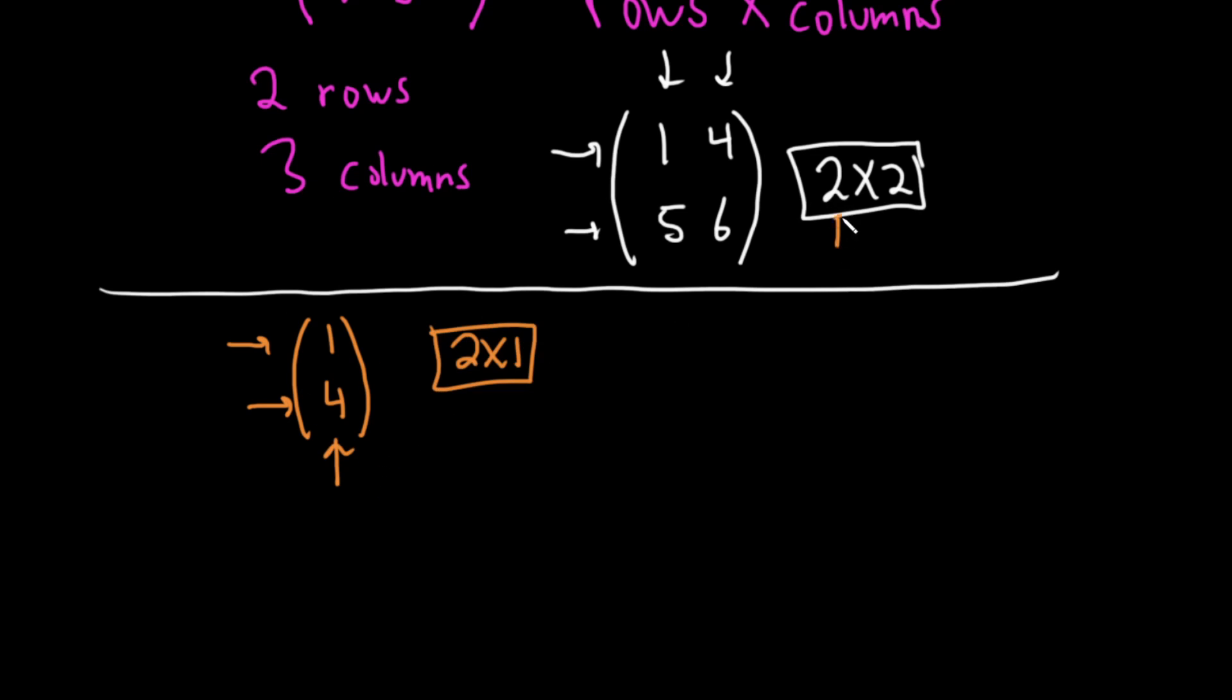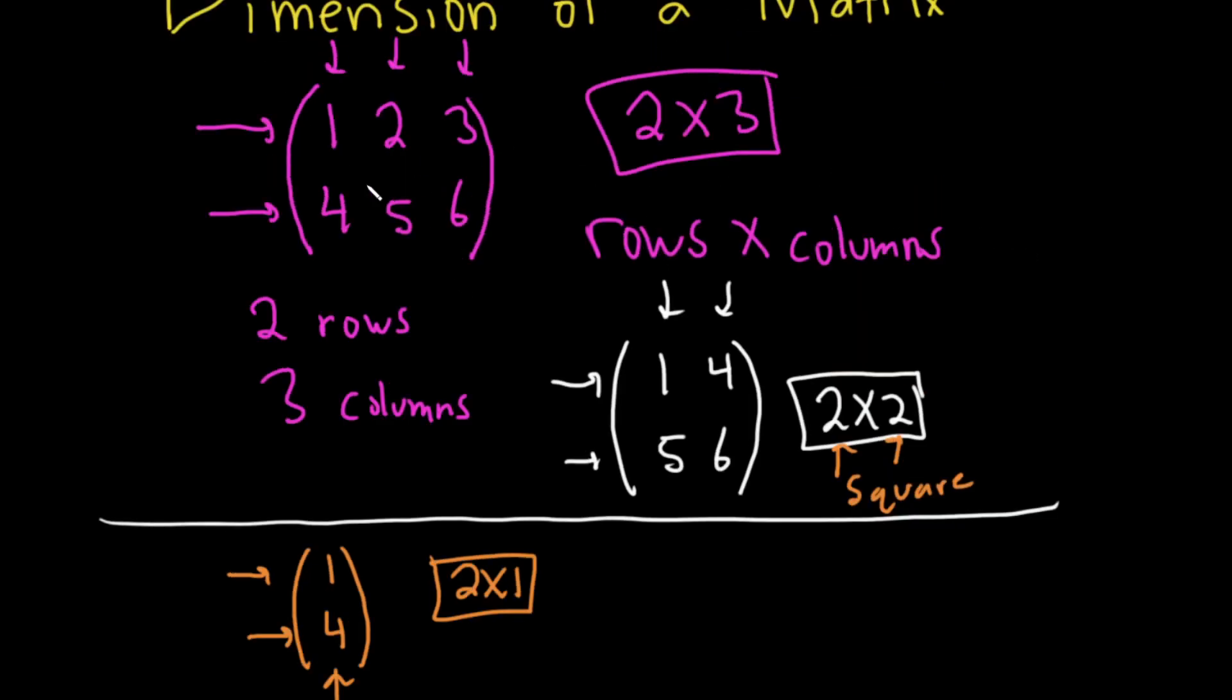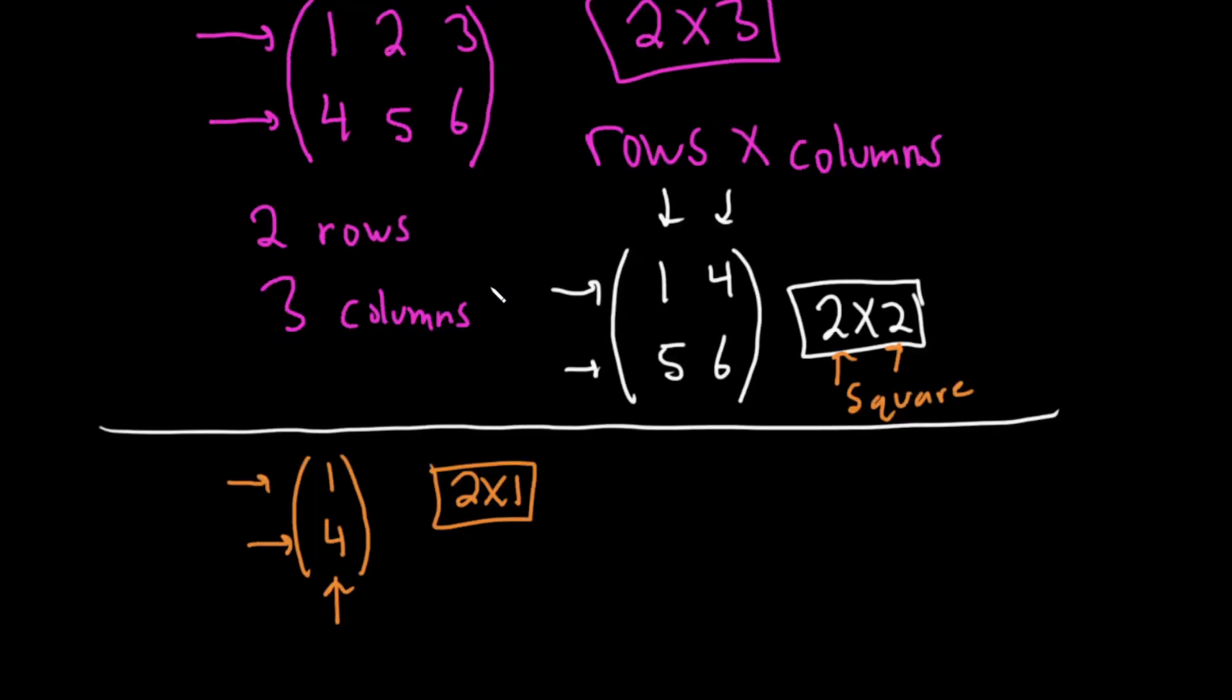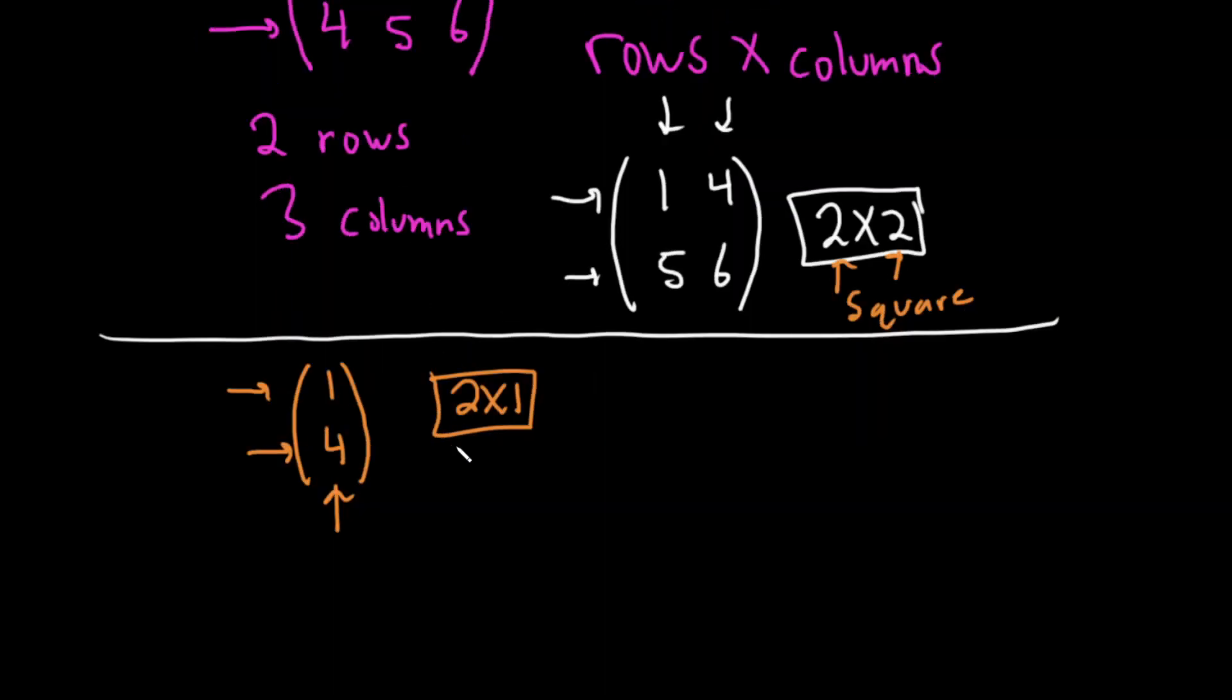By the way, when the rows are equal to the columns, it's called a square matrix. And up here, well, this one's not a square matrix because it's a 2 by 3. So this one doesn't really have a name. And again, this one here is called a column matrix.